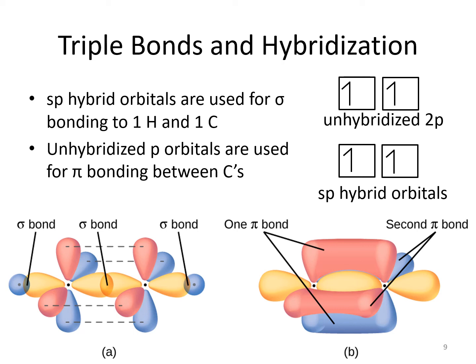The unhybridized p orbitals make pi bonds. The p orbitals are perpendicular to each other. The p orbital pointing up and down on one carbon can overlap with the parallel p orbital on the other carbon to make one pi bond. The p orbital pointing front and back on one carbon can overlap with the parallel p orbital on the other carbon to make the other pi bond. One pi bond points up and down, the other points front and back. Each pi bond contains two electrons, one from each carbon atom. In total, it is a triple bond containing a sigma bond made from sp hybrid orbitals and two pi bonds made from unhybridized p orbitals.